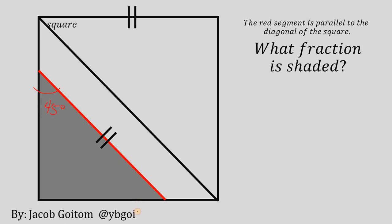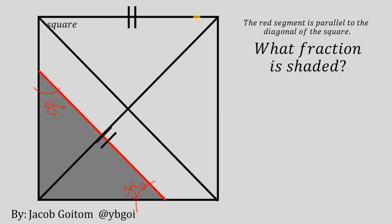Also, this other angle is the same — 45 degrees. Now, to answer what fraction is shaded, we are going to draw the other diagonal of the square. Doing this, we can see a lot of congruent triangles.